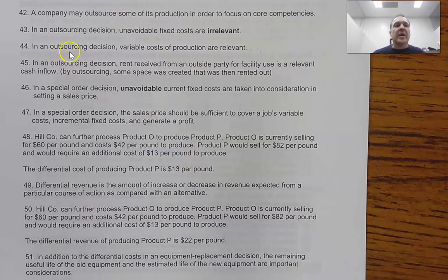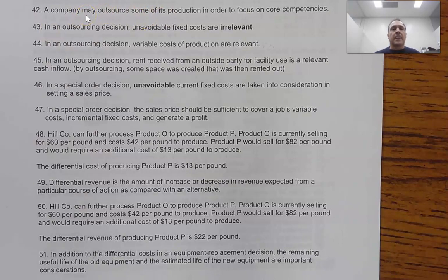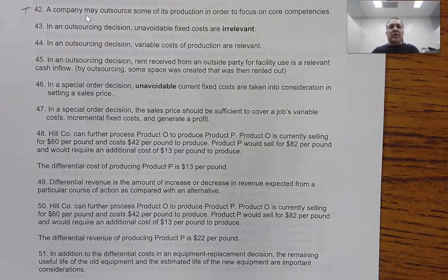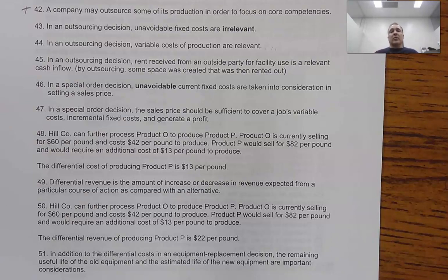Question 42 says: 'A company may outsource some of its production to focus on core competencies.' The key word here is 'may,' which makes it a true statement. We can outsource so that we can focus our attention on what we're really good at. Or, if we consider something a core competency, we might not outsource in order to maintain it. Either one is possible, and since it says 'may,' this is a true statement.